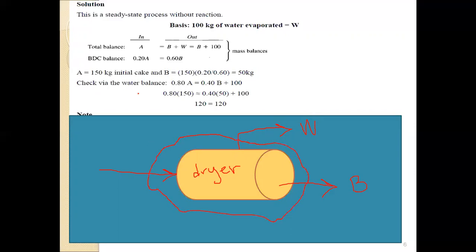You have A, the wet material, and you have W, the amount of water removed, and the product B. So input equals output. This is the simple material balance equation: A equals B plus W.